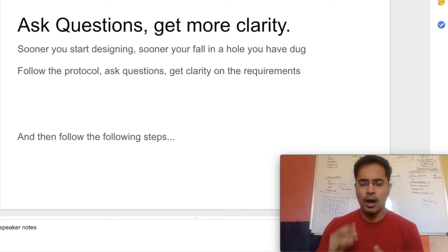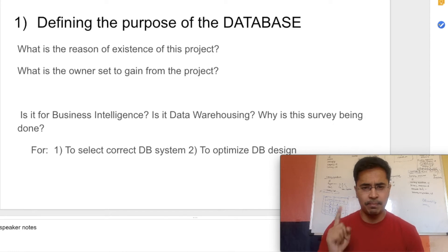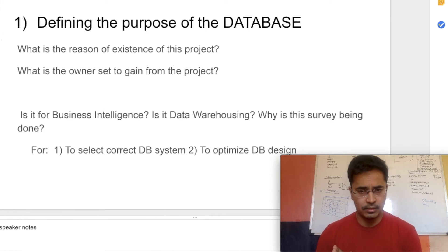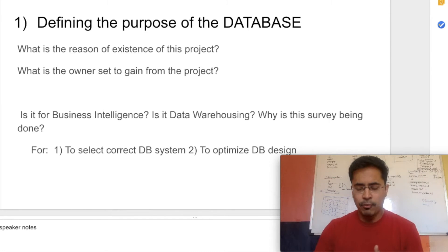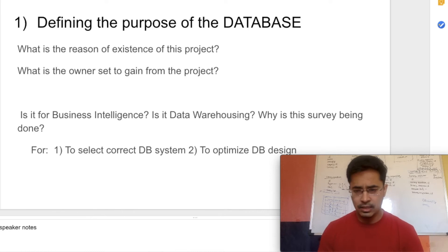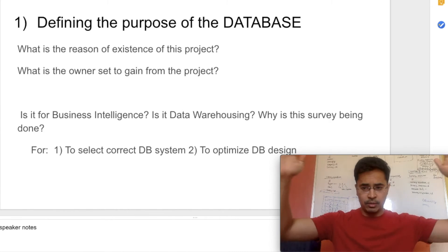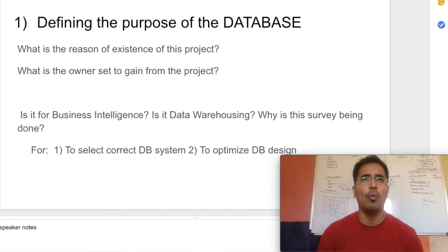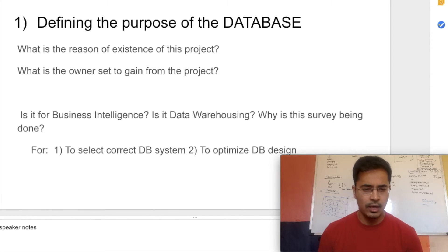Why do we need to do this? Data modeling, like getting tattooed, is very tough to correct your mistakes and redo things. So it's very important that you get it right the first time. Don't just jump into creating tables and columns and keys — think about it, think about the problem you are solving, think about the application you are building. Step number one is defining the purpose of the database. It's important to have the larger picture in mind before getting into the nitty-gritty details.